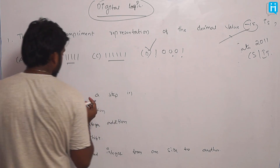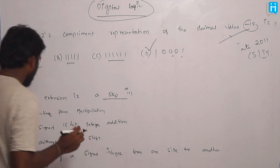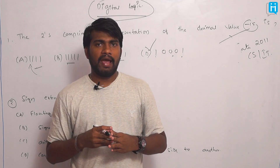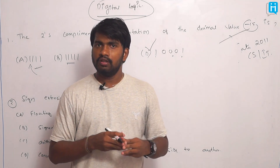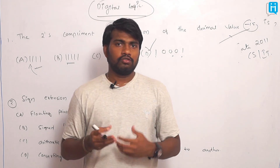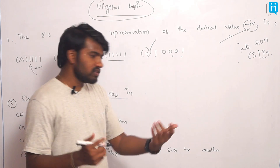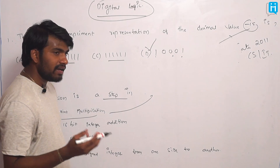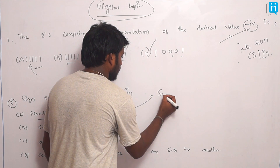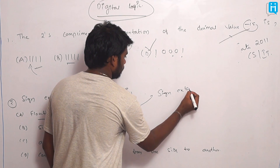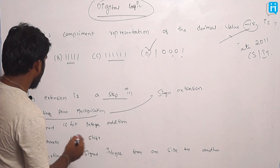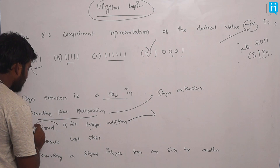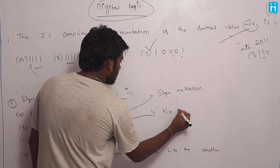The next question: sign extension is a step used in — so sign extension means when you are performing any binary operation, whether addition, subtraction, or multiplication, the sign should be considered. Now, the options are: floating point multiplication — when multiplying binary digits there will always be extension of sign; signed 16-bit integer addition — when adding 16-bit integers with sign, there will be no sign extension.